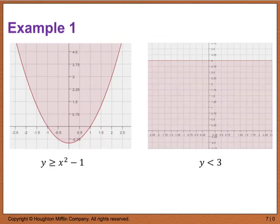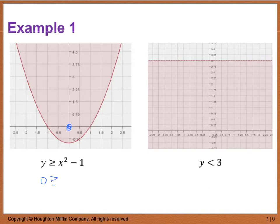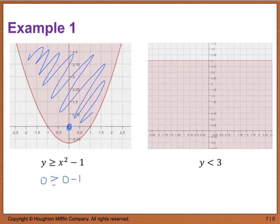Here's a representative example: y is greater than or equal to x squared minus one. We graph y equals x squared minus one. Because of the greater than or equal to inequality, the line is solid. Picking test point (0, 0): is 0 greater than or equal to 0 minus 1? Because it is, we shade the region inside the parabola. If it were false, we would shade the outside region.